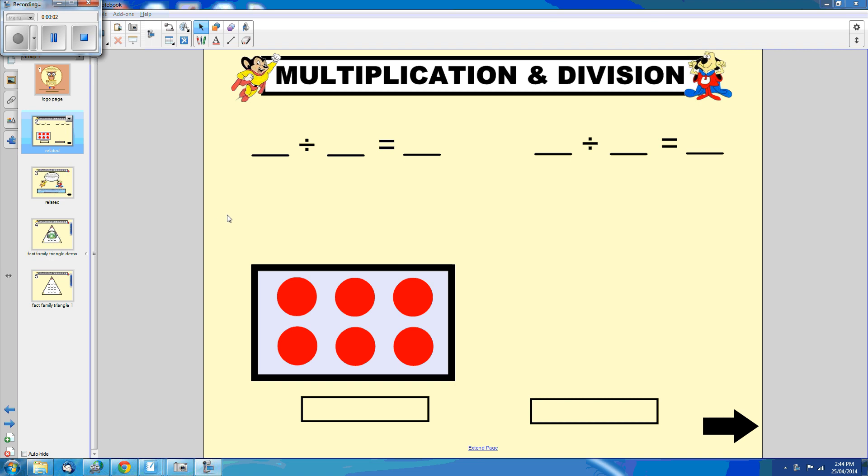You would be familiar with showing multiplication facts using an array. So this array shows that 3 times 2 equals 6.